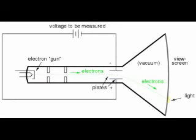A reversal of voltage polarity across the two plates will result in a deflection of the electron beam in the opposite direction, making this type of meter movement polarity sensitive.